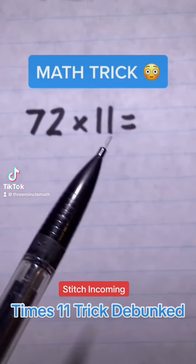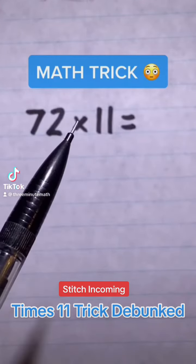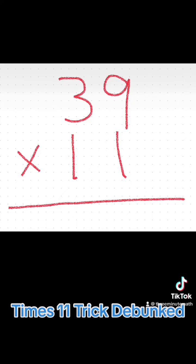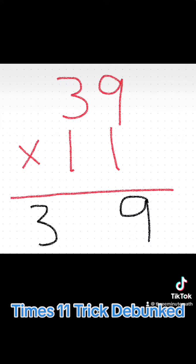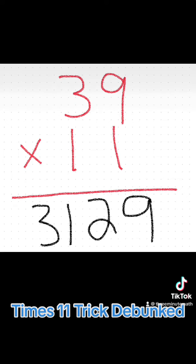Here's how you can multiply any number by 11 in just seconds. I want to try this trick out for myself, so I'm going to start with 39 times 11. The video says to take the other factor — the non-11 factor — and separate the two digits, putting them on the outside. I did that: 3 and 9. Then you add those two digits together, so 3 plus 9 equals 12, and put that in the middle.